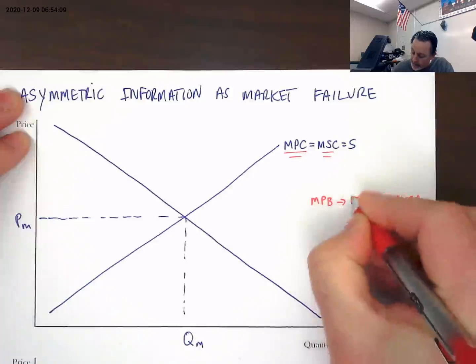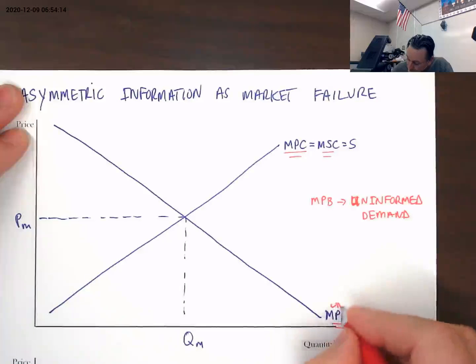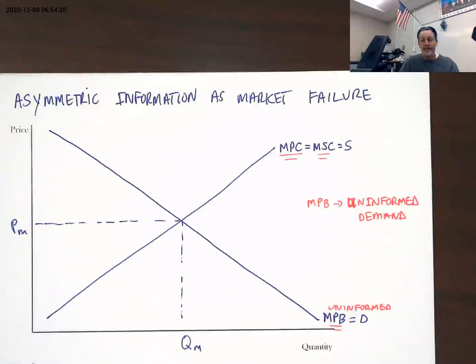This uninformed demand isn't reflecting the best interest of either that individual buyer or society as a whole. In the example of the used car, if that buyer were fully informed about what that car had problems with, what repairs it had...